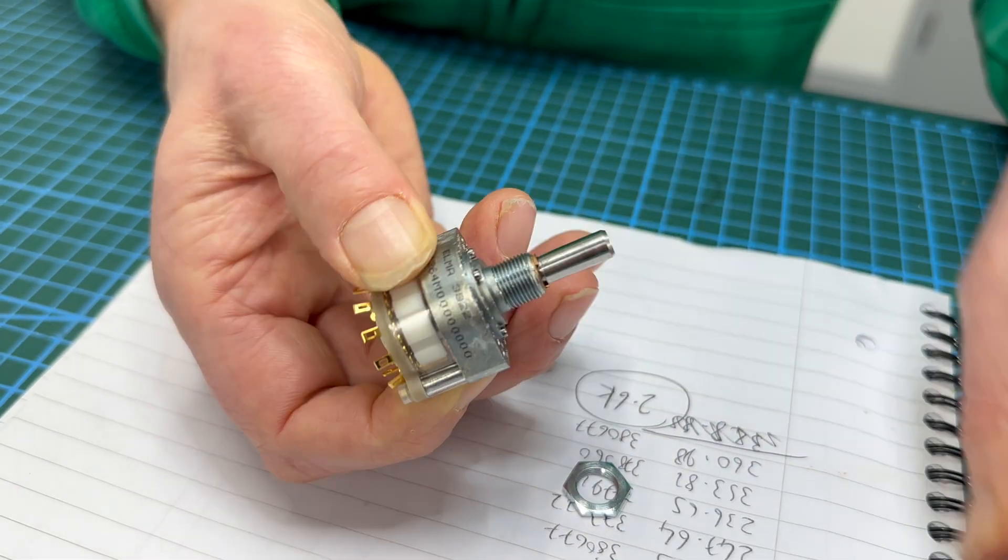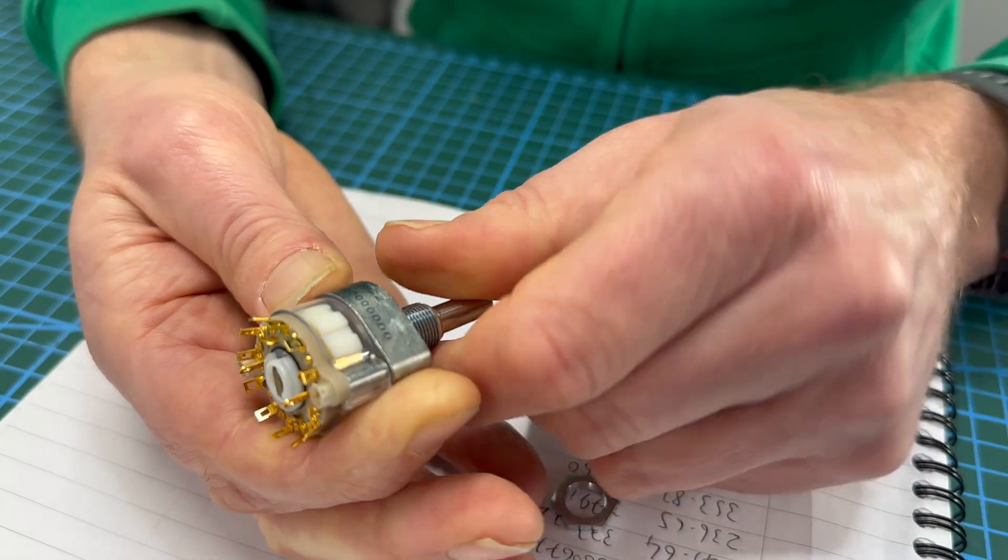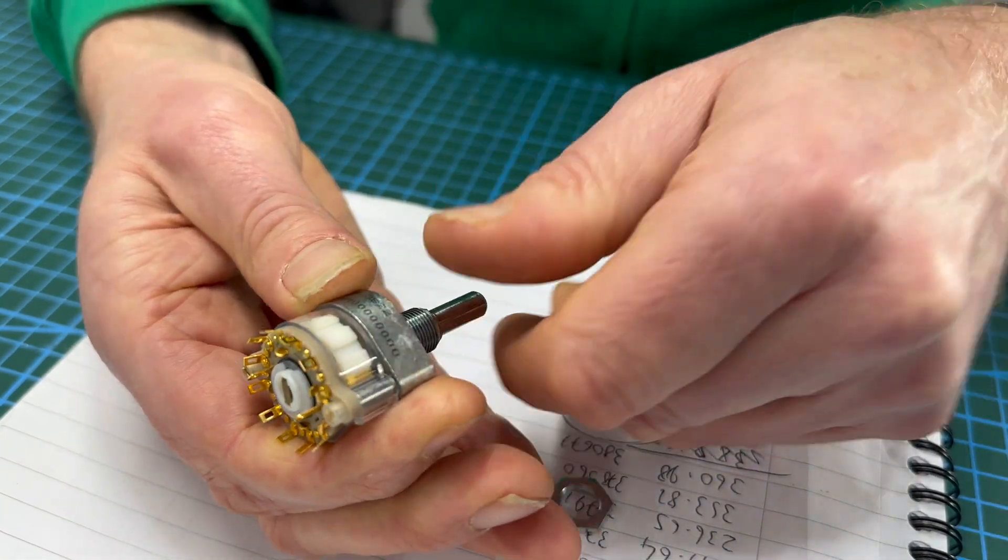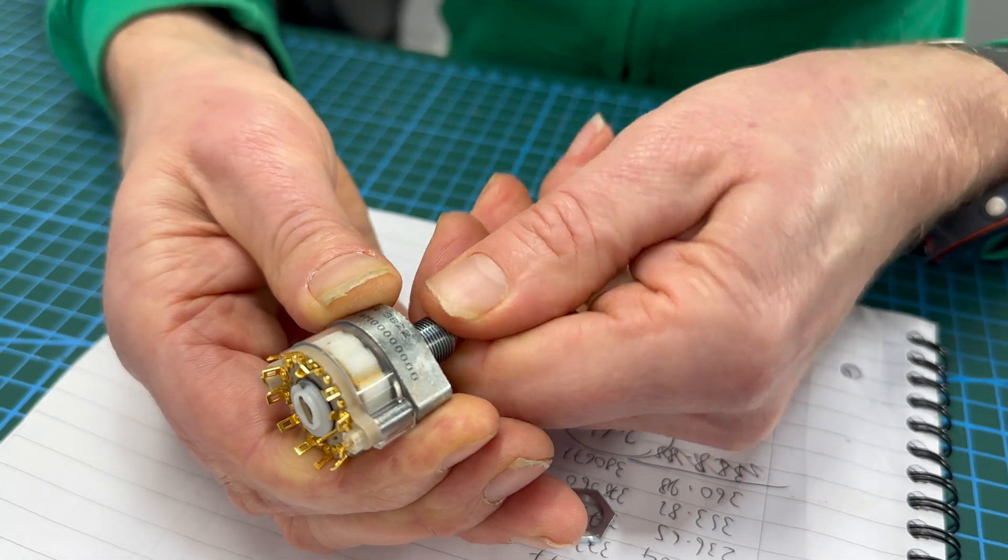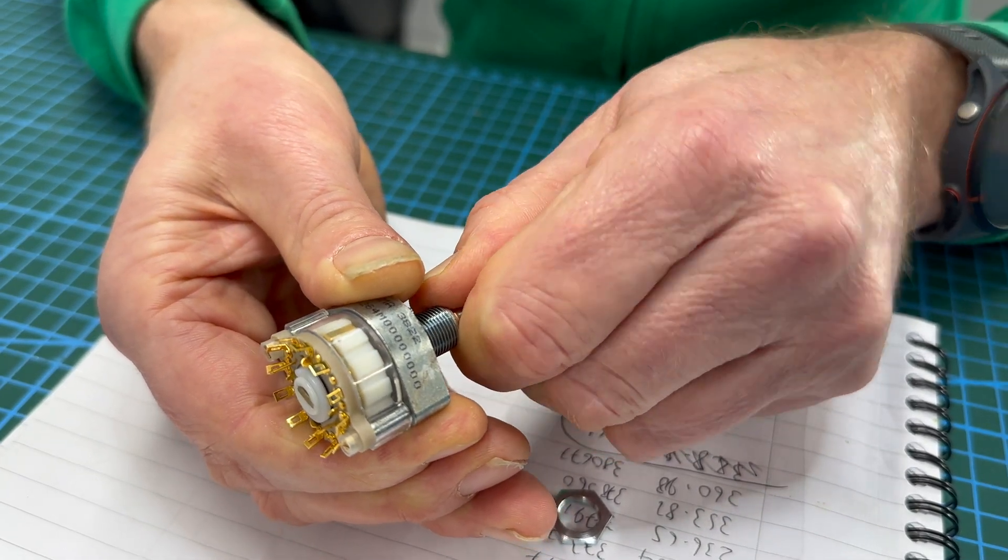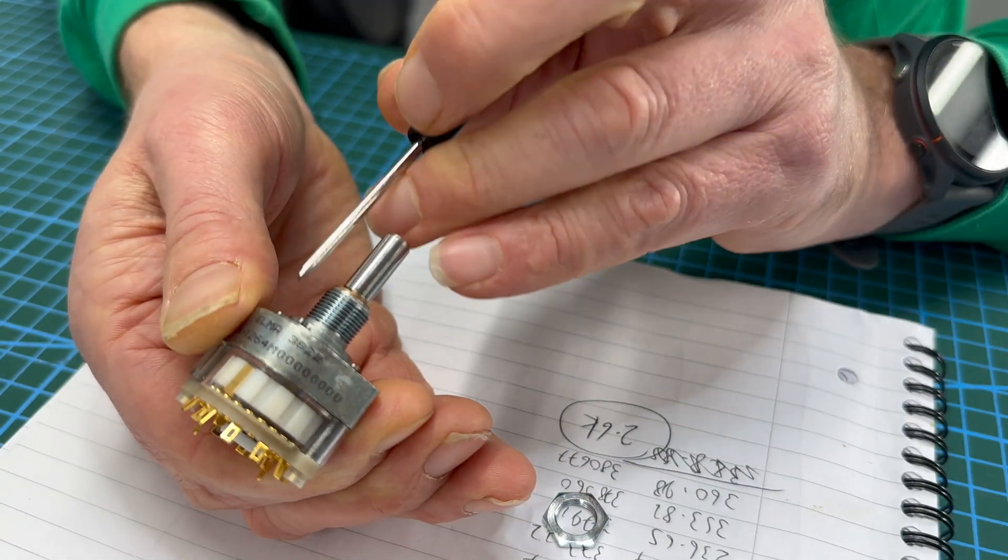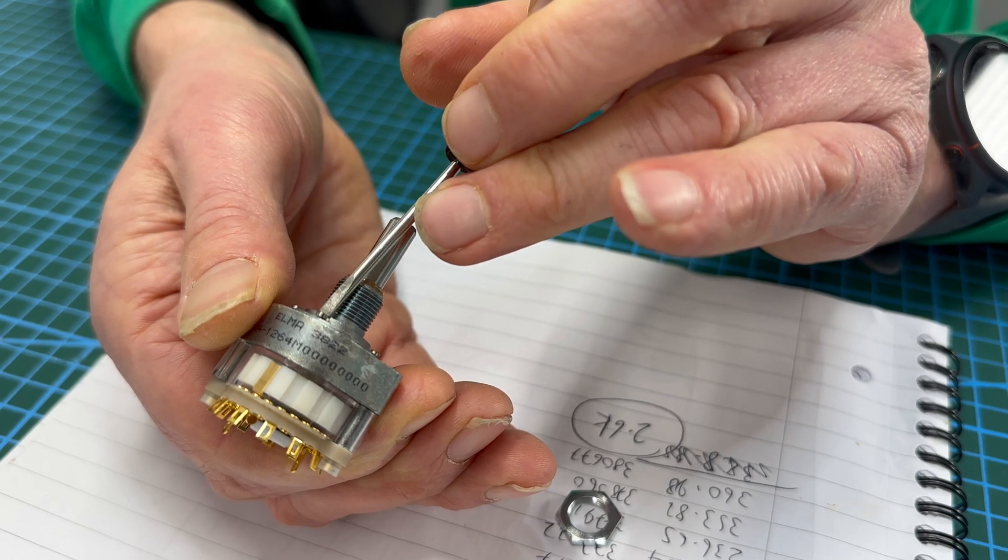Oh cool so you can see it's on position one there, the gold wiper is in line. Position one, position two, position three, position four and it will go no further because you've stopped the flow with the screw there.